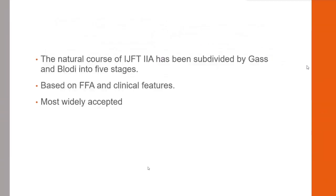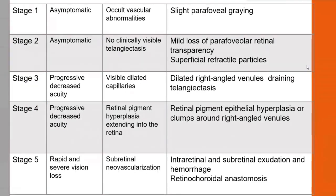The course of IJFT-2A has been subdivided by Gass and Blodi into 5 stages based on FFA and clinical features. In stages 1 and 2, patients are asymptomatic. In stages 3 and 4, there is progressive decreased visual acuity. In stage 5, there is rapid and severe vision loss. Stage 1 shows slight parafoveal graying; stage 2 adds superficial refractile crystals; stage 3 shows dilated right-angled venules; stage 4 adds RPE hyperplasia around the right-angled venules; and stage 5 is characterized by subretinal neovascularization.